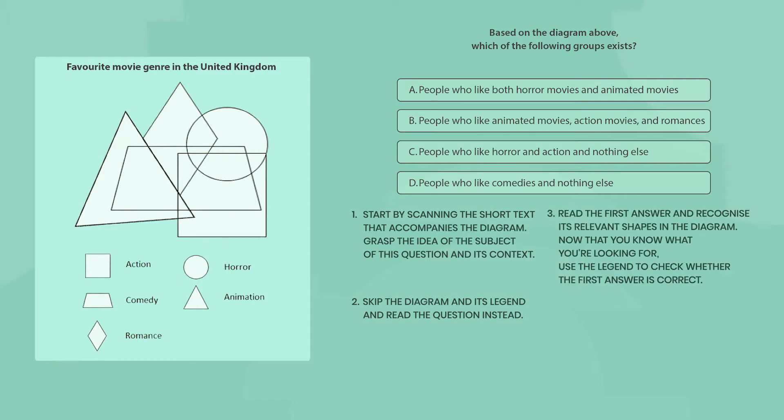3. Read the first answer and recognize its relevant shapes in the diagram. Now that you know what you're looking for, use the legend to check whether the first answer is correct. 4. If the answer is incorrect, move on to the second one and repeat.